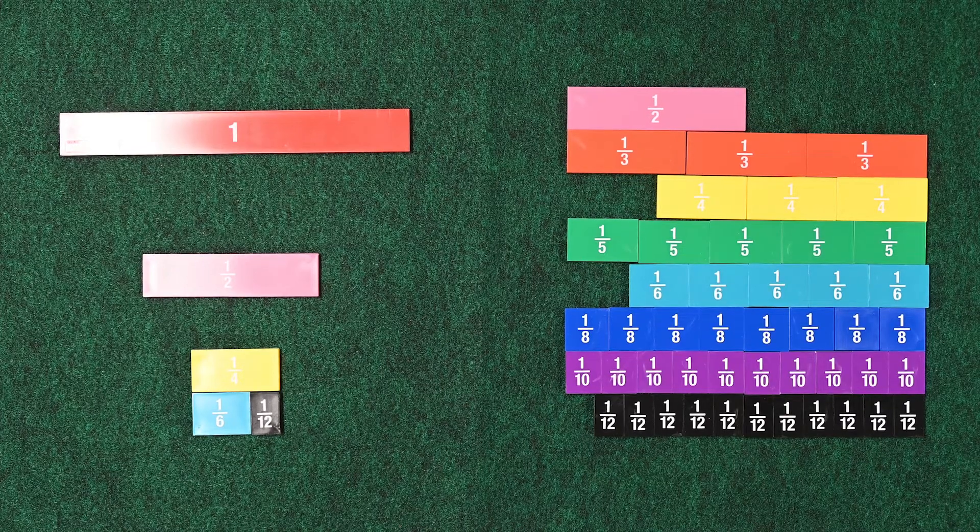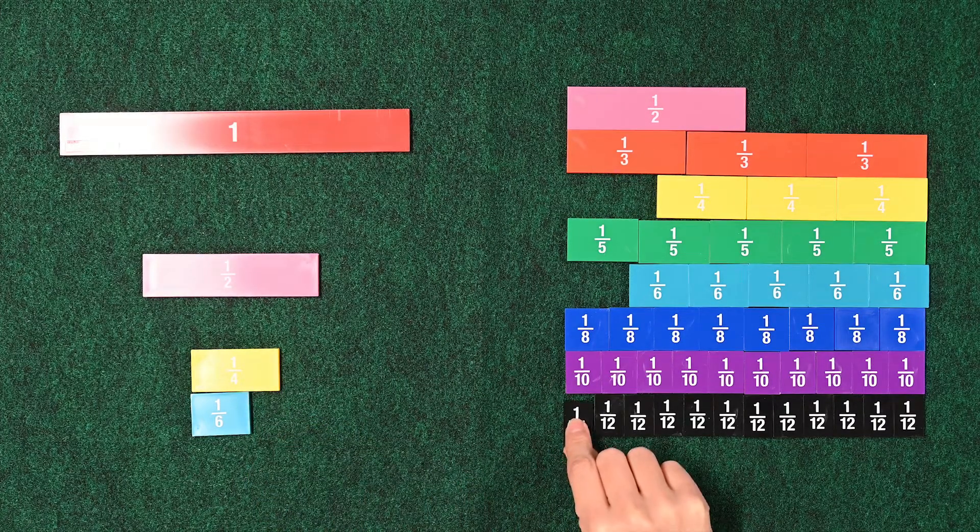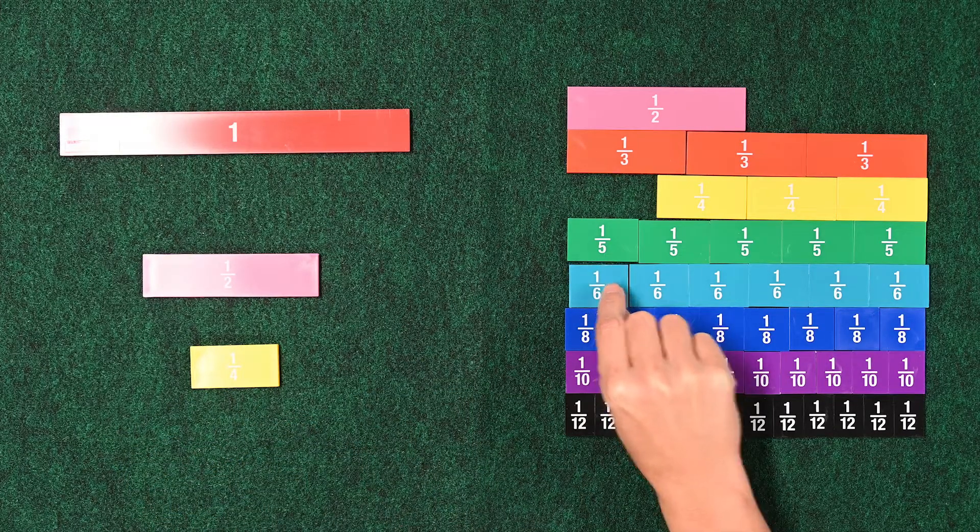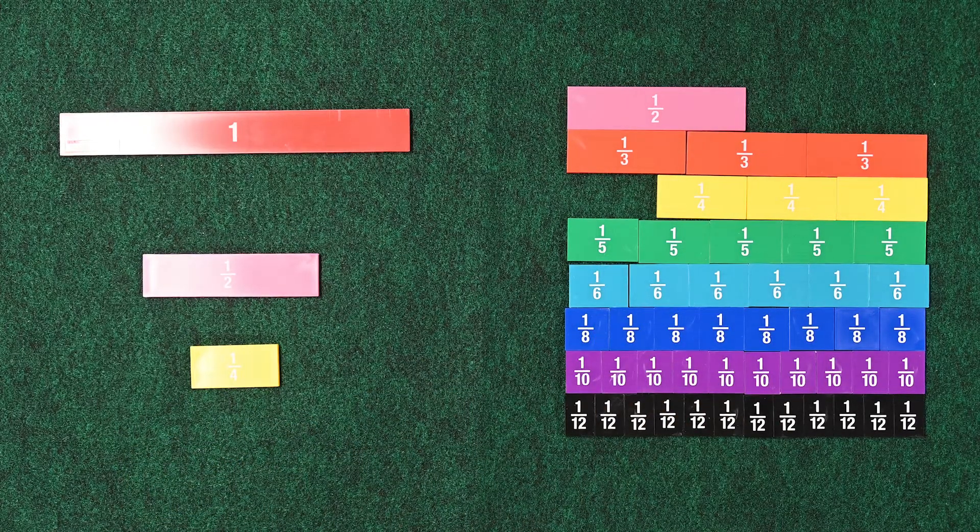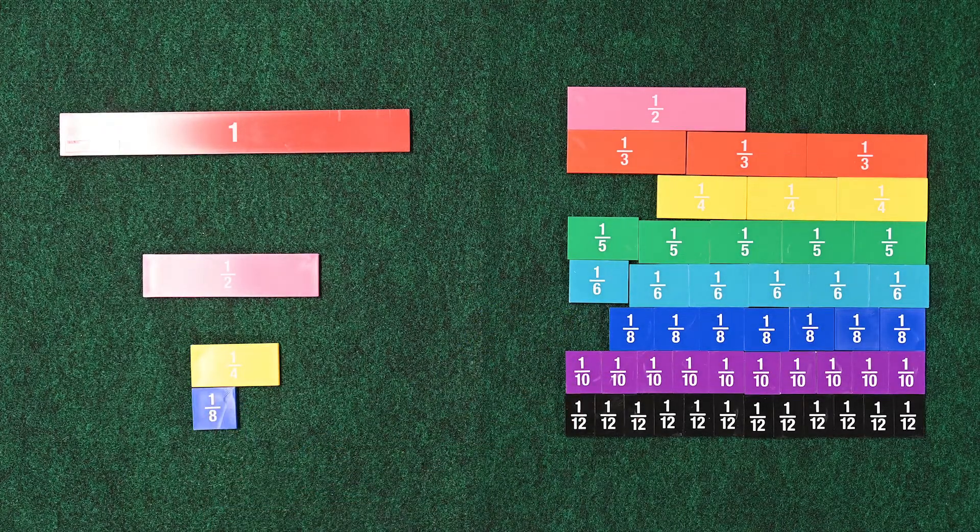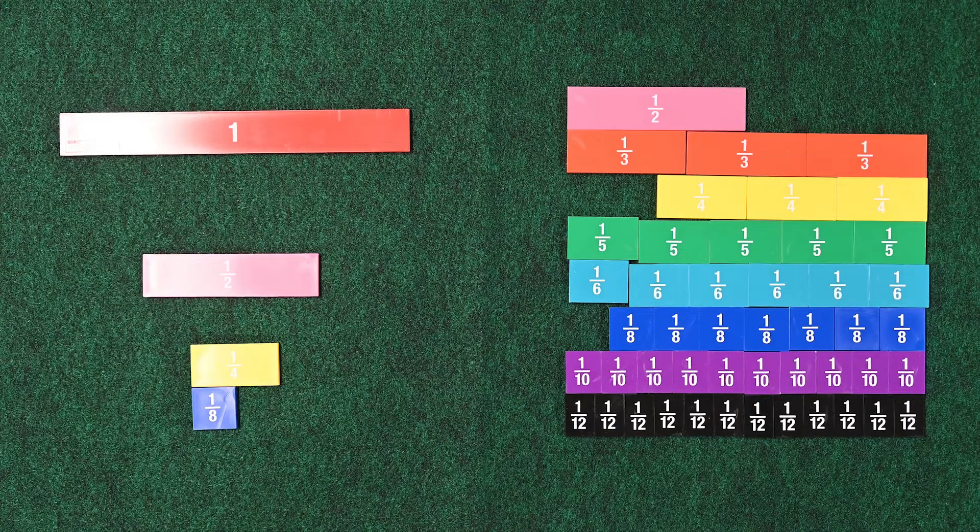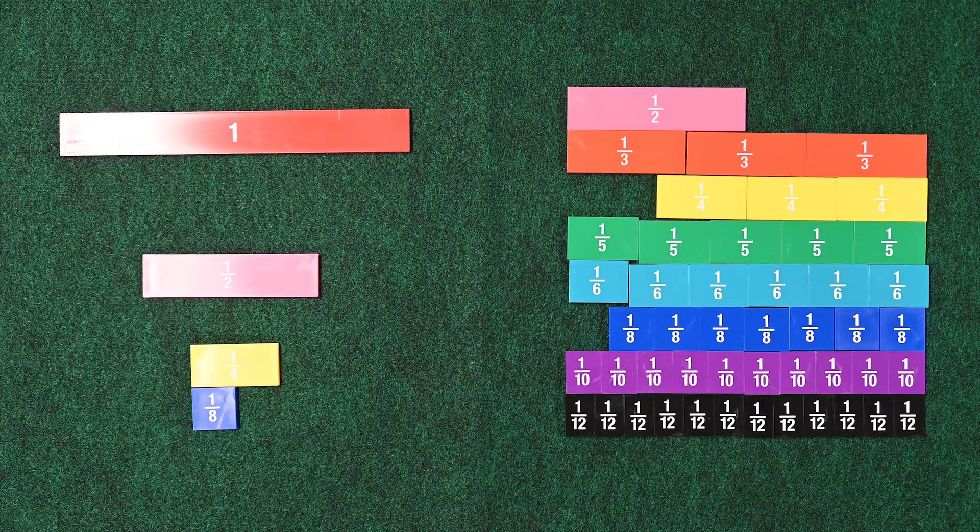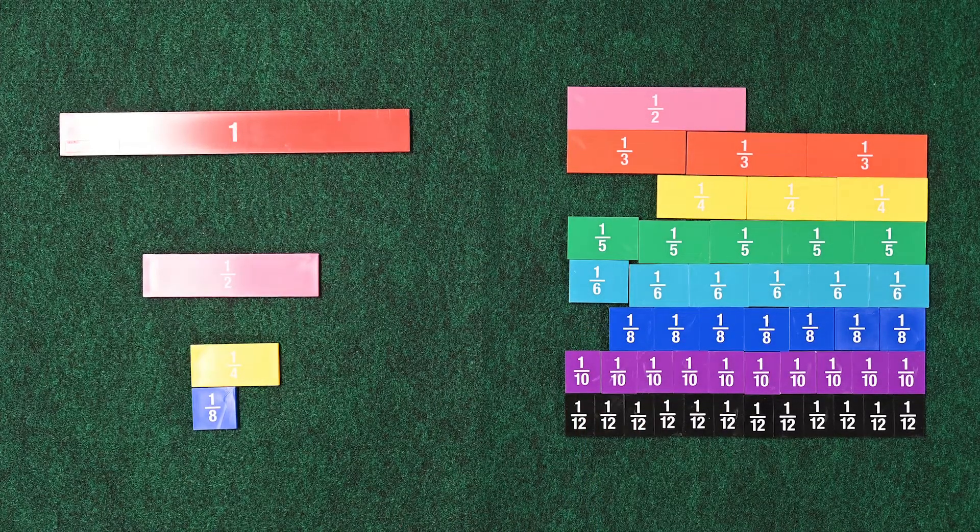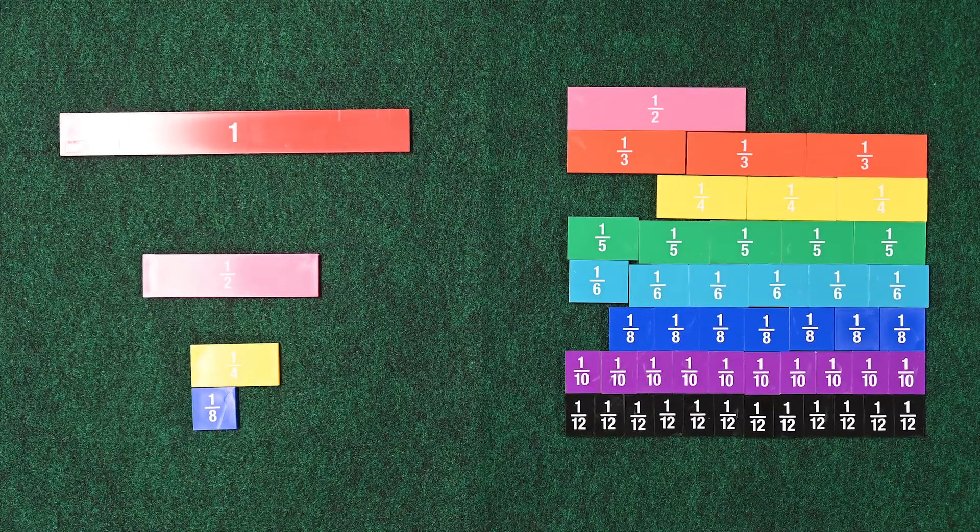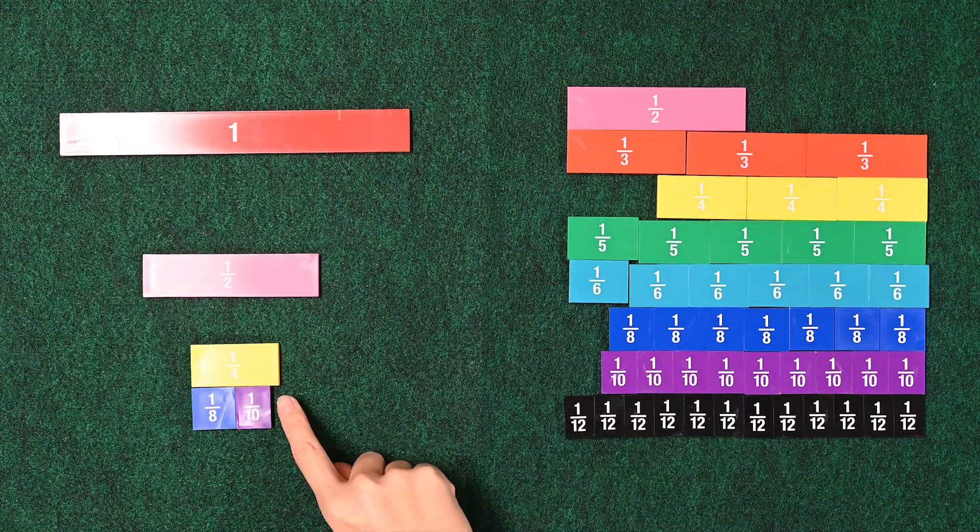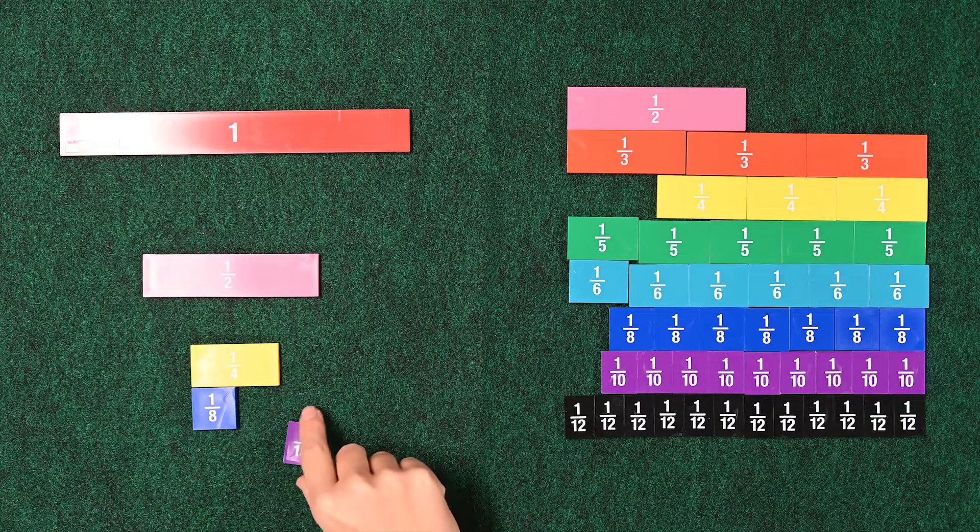Let's put away the 1 12th and the 1 6th and see how else we could make 1 4th. Could we try the 1 8th? If we put the 1 8th in there, what other piece could we put? The 1 10th is smaller, as we know, because that's if you divide something into 10 pieces and take one of them. We can try putting it there, but I think it's going to be a little too small. And there's no piece that fits right there.